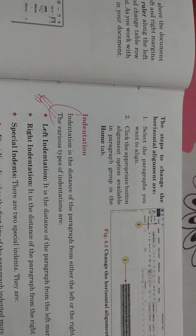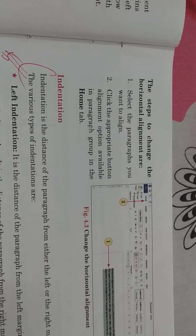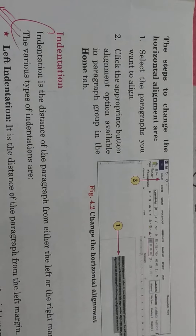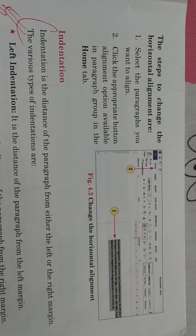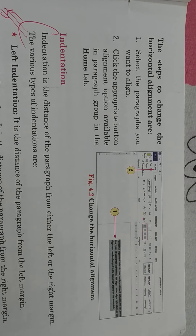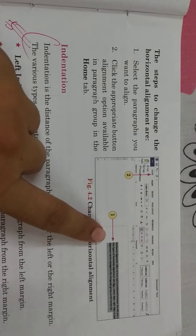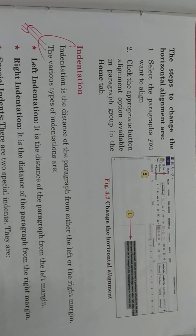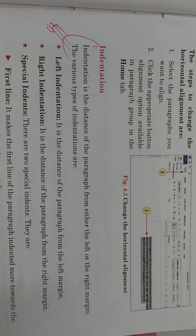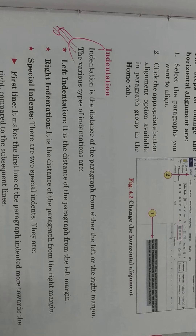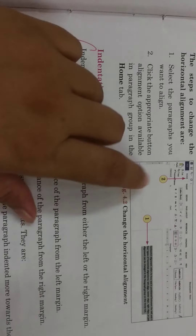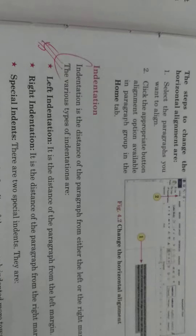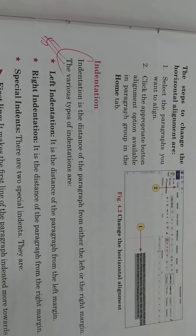Now let us see the steps to change the horizontal alignment. Select the paragraph you want to align. As shown in figure number one, they have selected it — a colored background is shown — meaning they have dragged with the mouse and selected it. Then click the appropriate alignment button from the Home tab, whichever you want from the various options available. Whichever you choose, it will be applied in that way.